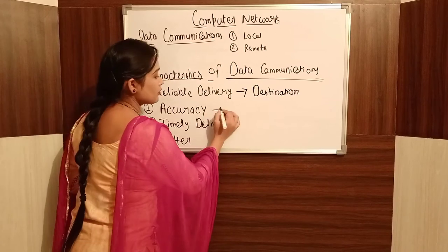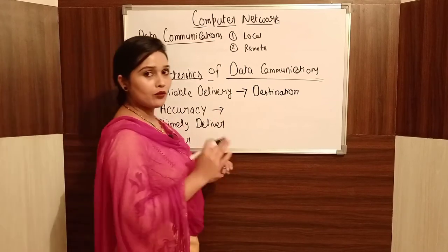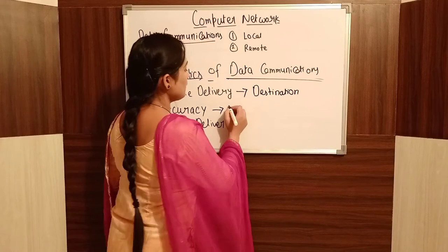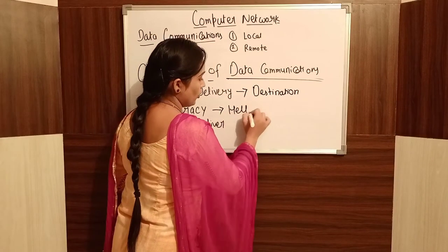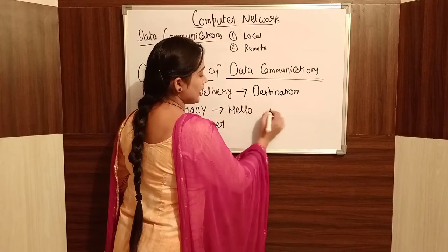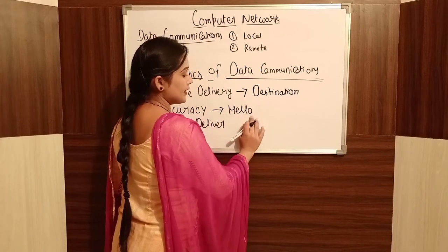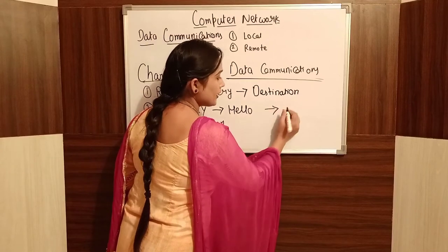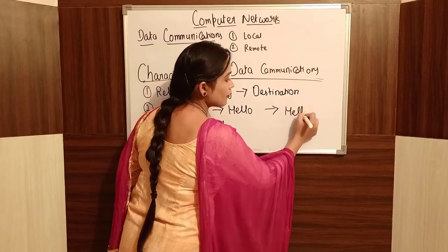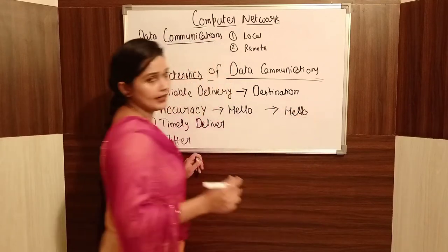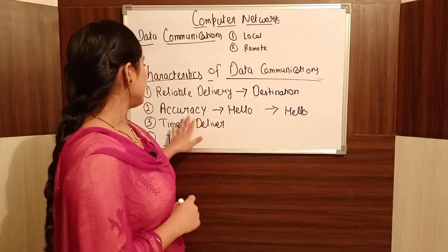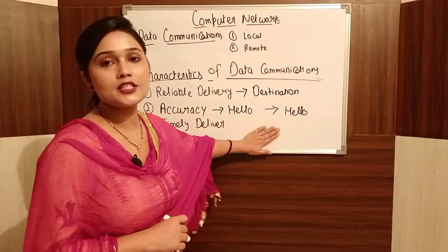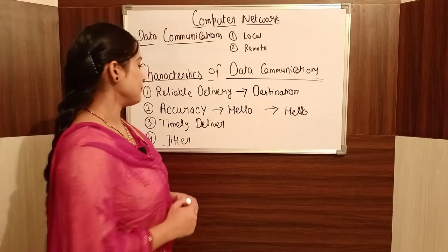Next is accurate data communication. Accurate data communication means that accurate data reaches the destination. If you send a message from the sender to the receiver, you need to check that the message received is accurate or not.